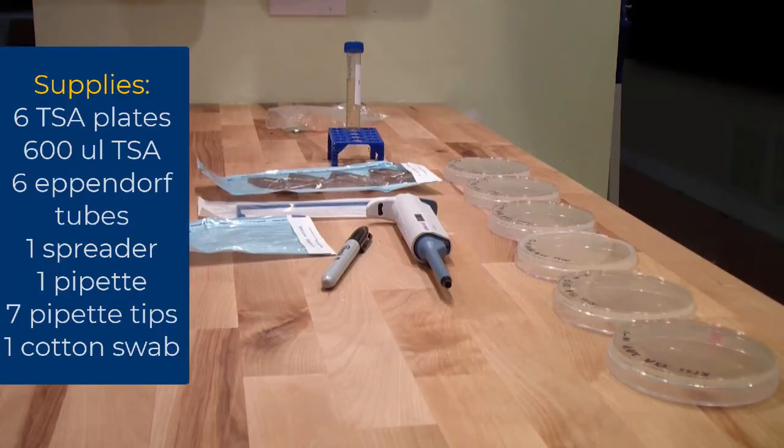Gather your supplies. You will need six TSA plates, 600 microliters of TSA, six Eppendorf tubes, one spreader, one pipetter, seven tips, and one cotton swab.